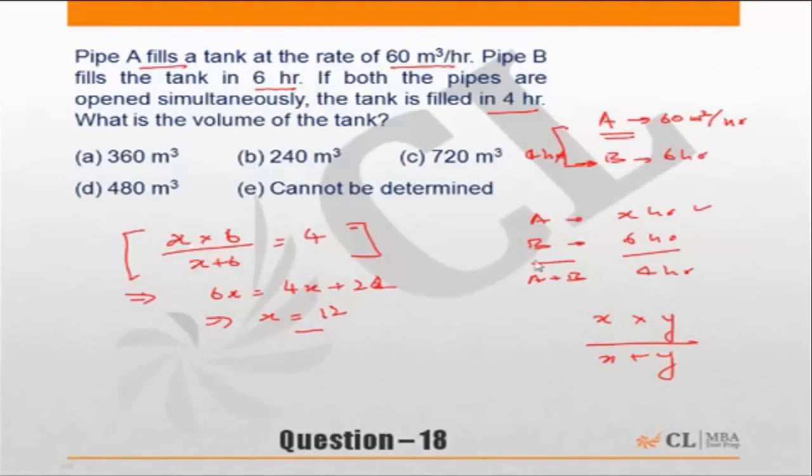That means pipe A fills the tank in 12 hours, but its rate of filling is 60 cubic meters per hour. So the volume of the tank will be 12 × 60, which equals 720 cubic meters. Choice C is the correct answer.